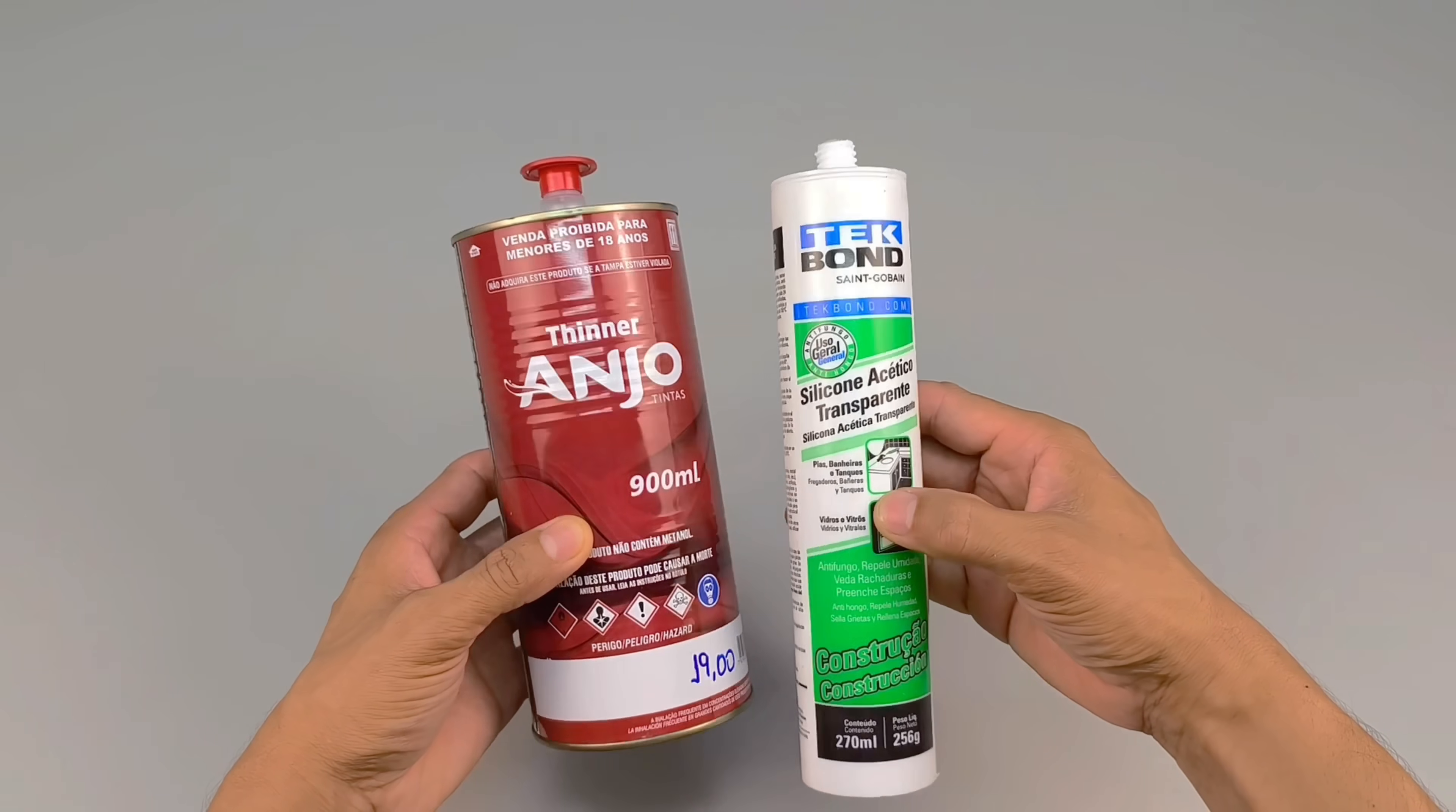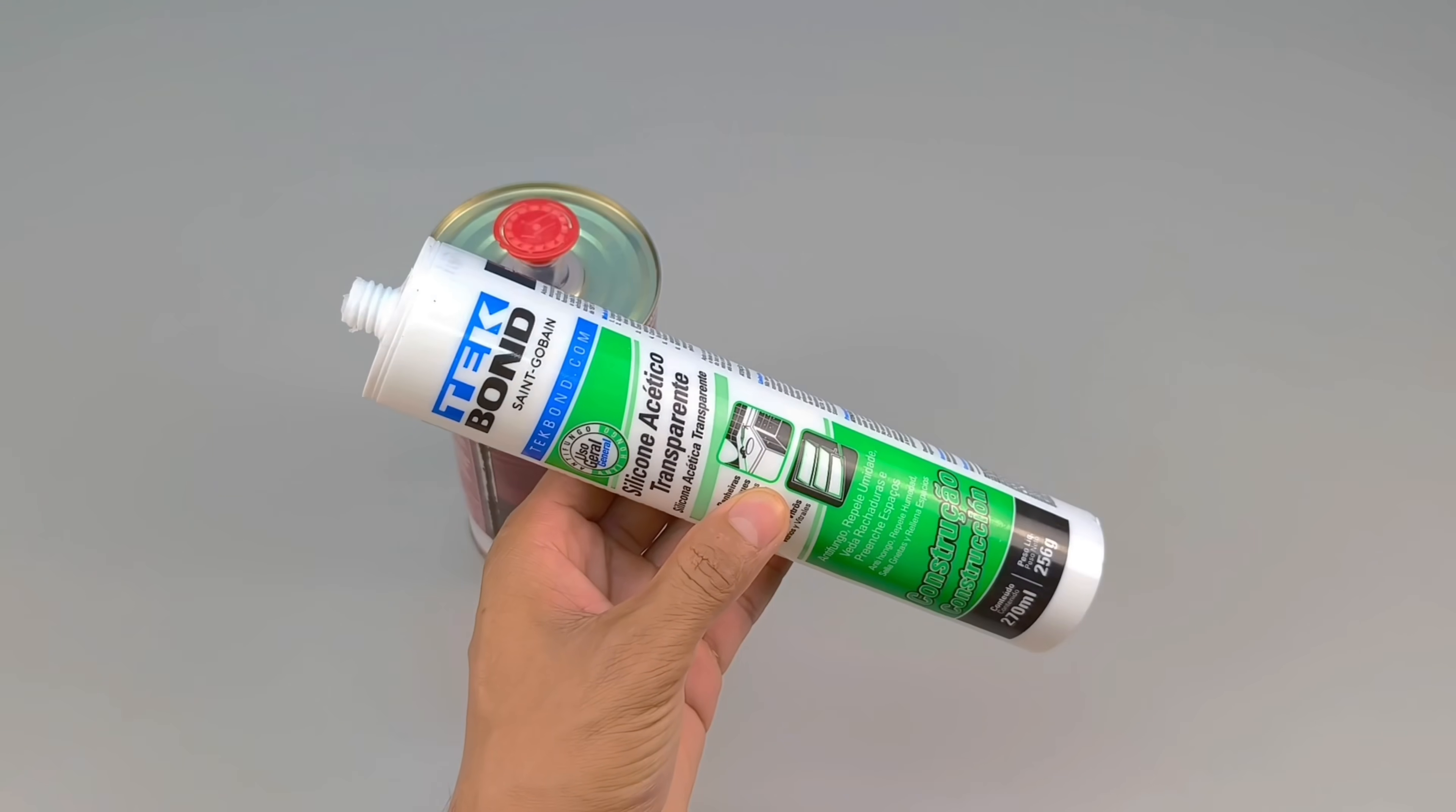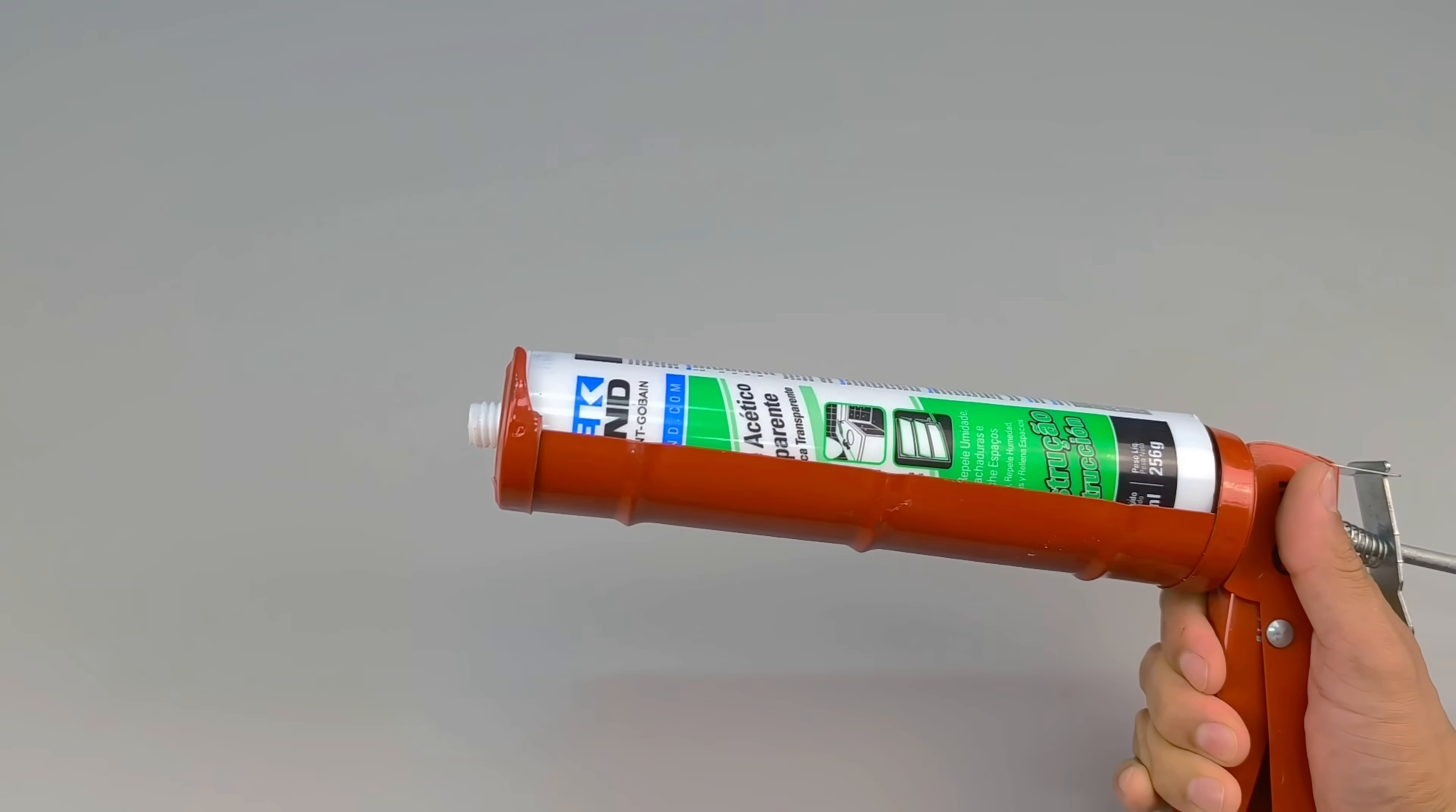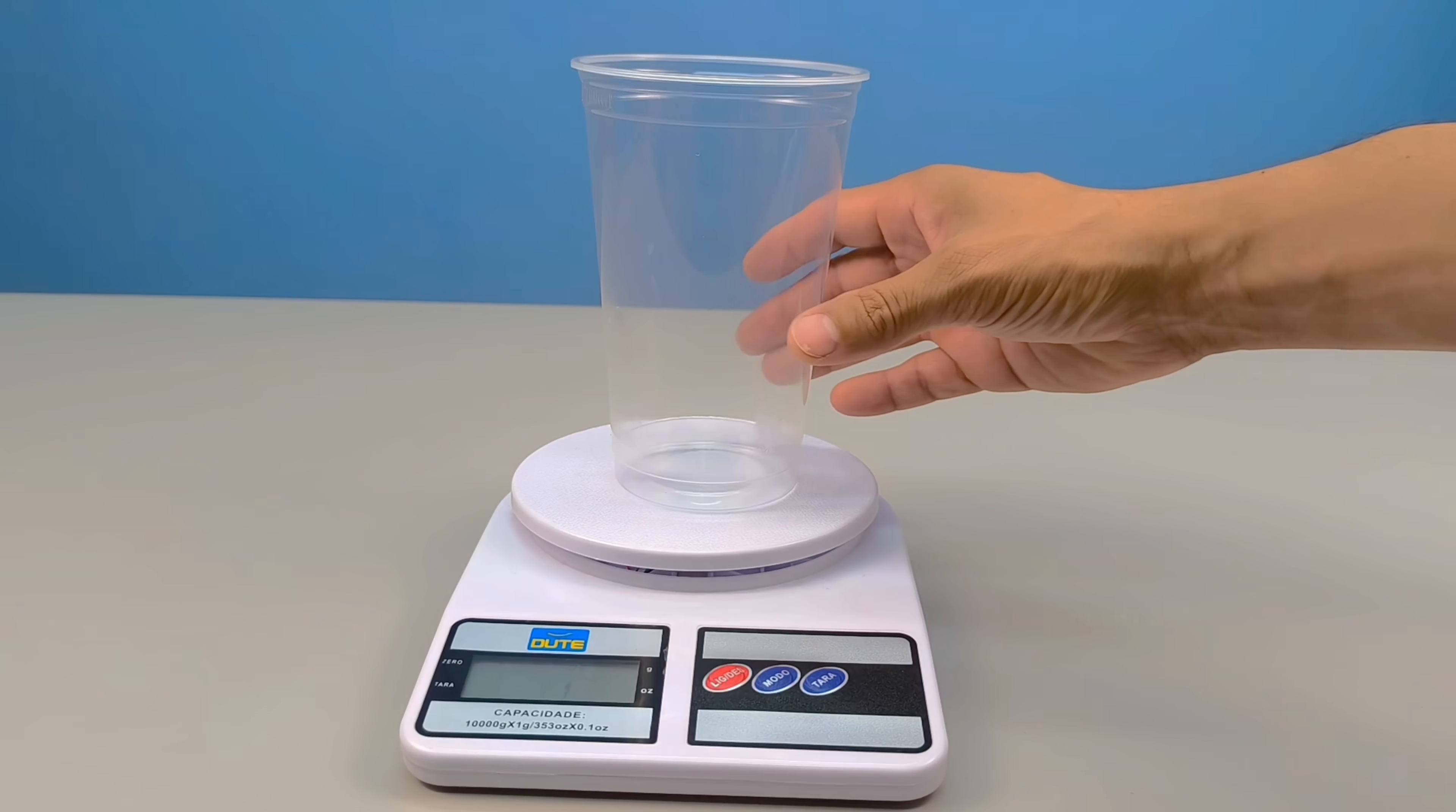Have you ever stopped to imagine what could happen when you combine two materials so different, yet so present in the daily lives of any creative and curious artisan? Silicone and paint thinner. It seems unlikely, strange, and even a little risky, doesn't it? Well, that's exactly what we're going to try today, and the result of this unusual combination will surprise you in ways you might never have imagined.